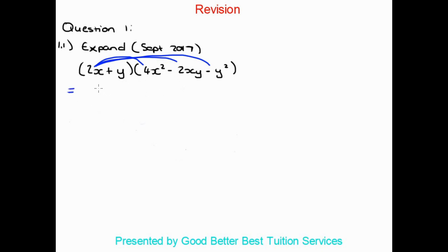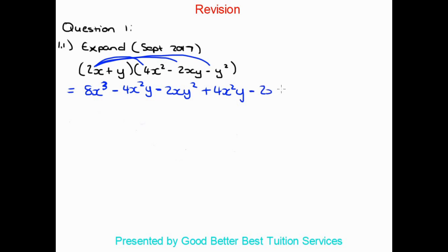So 2x times 4x squared gives me 8x cubed. 2x times minus 2xy gives me minus 4x squared y. 2x times minus y squared gives me minus 2xy squared. Then y times 4x squared gives me plus 4x squared y. y times minus 2xy gives me minus 2xy squared. y times minus y squared gives me minus y cubed. We can cancel the negative and positive 4x squared y as additive inverses, leaving us with 8x cubed minus 4xy squared minus y cubed.